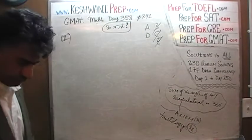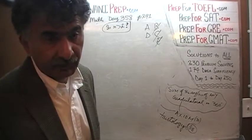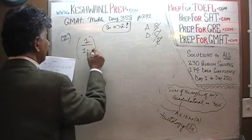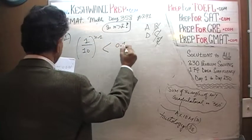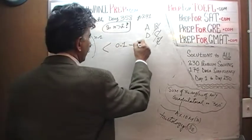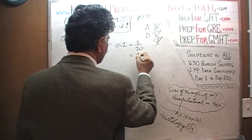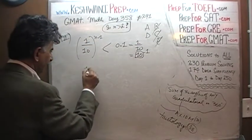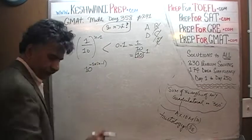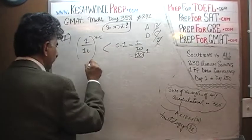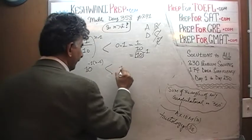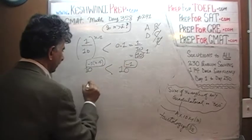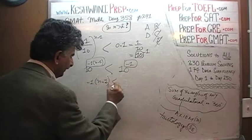In the second statement, they tell us that 1 over 10 raised to (N−1) is less than 0.1. Again, the same process applies: 0.1 is the same as 1 over 10, which in turn is 10 raised to negative 1. So 1 over 10^(N−1) is 10^(−1·(N−1)), and the question becomes: is 10^(−(N−1)) less than 10^(−1)? Which is the same as asking: is −(N−1) less than −1?